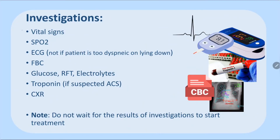Regarding investigations, vital signs — blood pressure and SpO2 — are most important. ECG should not be prioritized if the patient is too dyspneic. If a patient presents with pulmonary edema, give oxygen first, withdraw blood for investigations, administer furosemide, and then perform the ECG once the patient improves. The ECG can even be done in the sitting position. Do not delay treatment for the ECG.